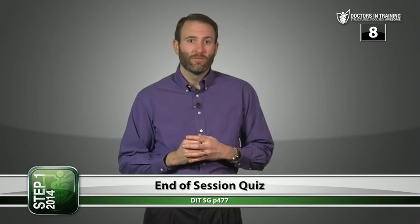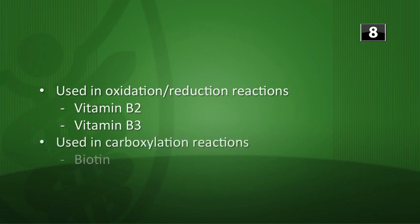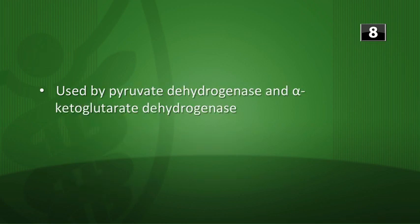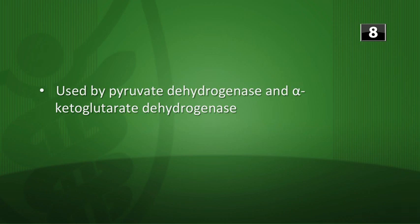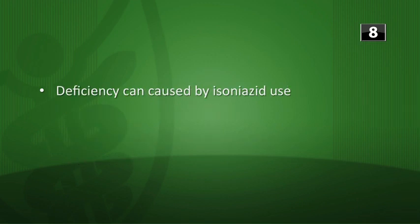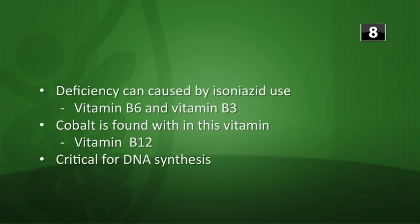Which vitamin matches each statement? Used in oxidation-reduction reactions — vitamin B2 riboflavin (makes FAD and FMN) and also vitamin B3 niacin (makes NAD and NADP). Used in carboxylation reactions — biotin; also remember vitamin K, a cofactor for gamma-carboxylation of glutamate. Requires intrinsic factor for absorption — vitamin B12. Used by pyruvate dehydrogenase and alpha-ketoglutarate dehydrogenase — primarily vitamin B1 thiamine. Can elevate HDL and lower LDL — B3 niacin. Deficiency caused by isoniazid use — primarily B6, but also B3 niacin. Cobalt is found within this vitamin — cobalamin, so vitamin B12. Critical for DNA synthesis — folate and B12.